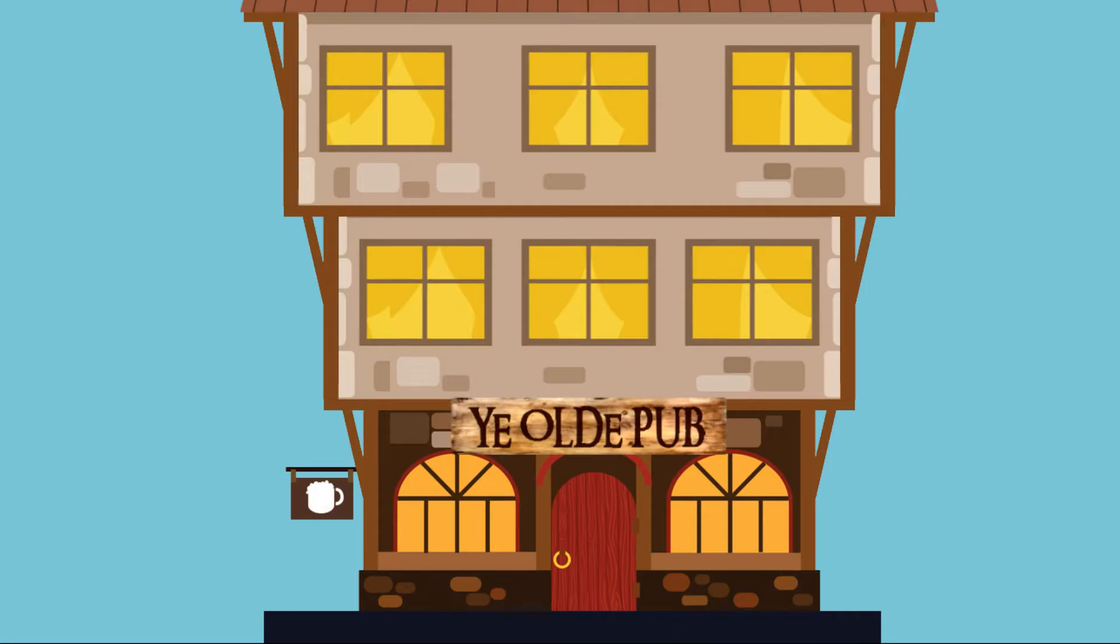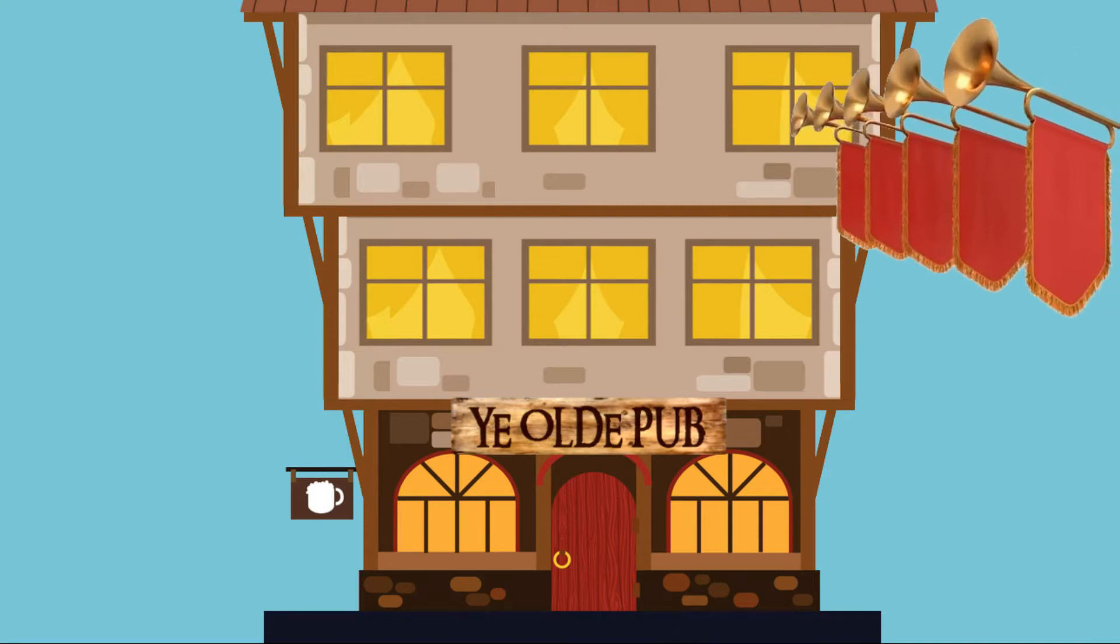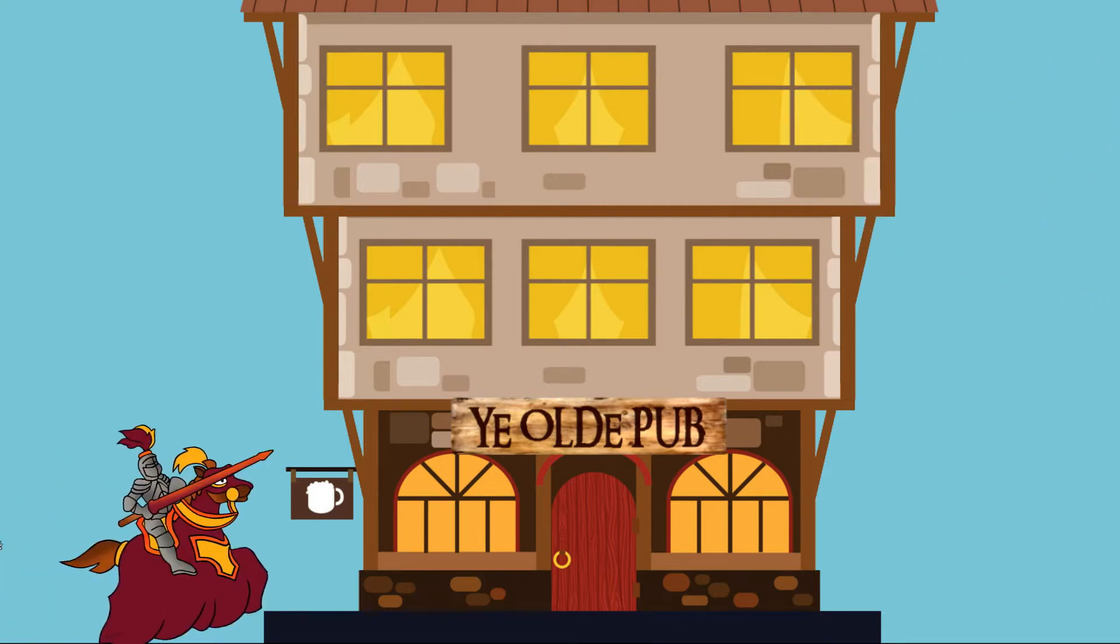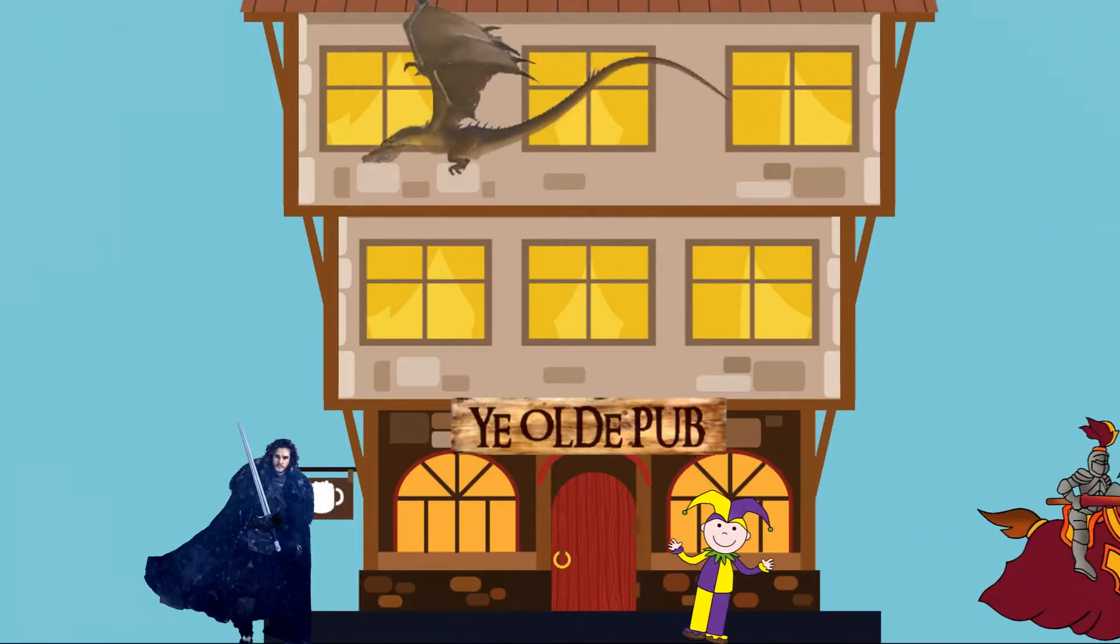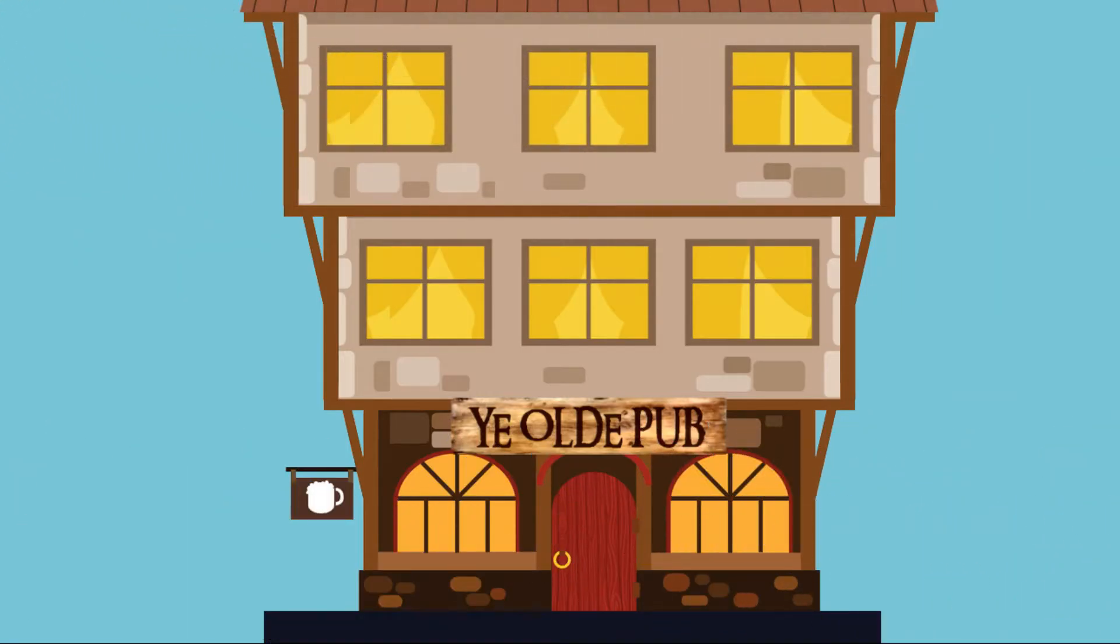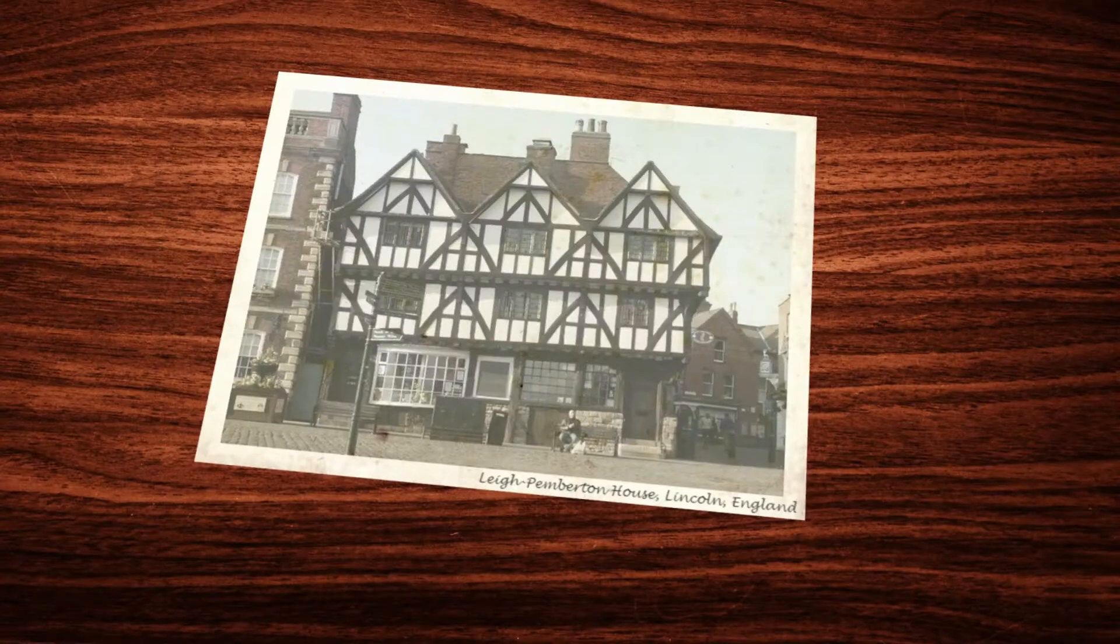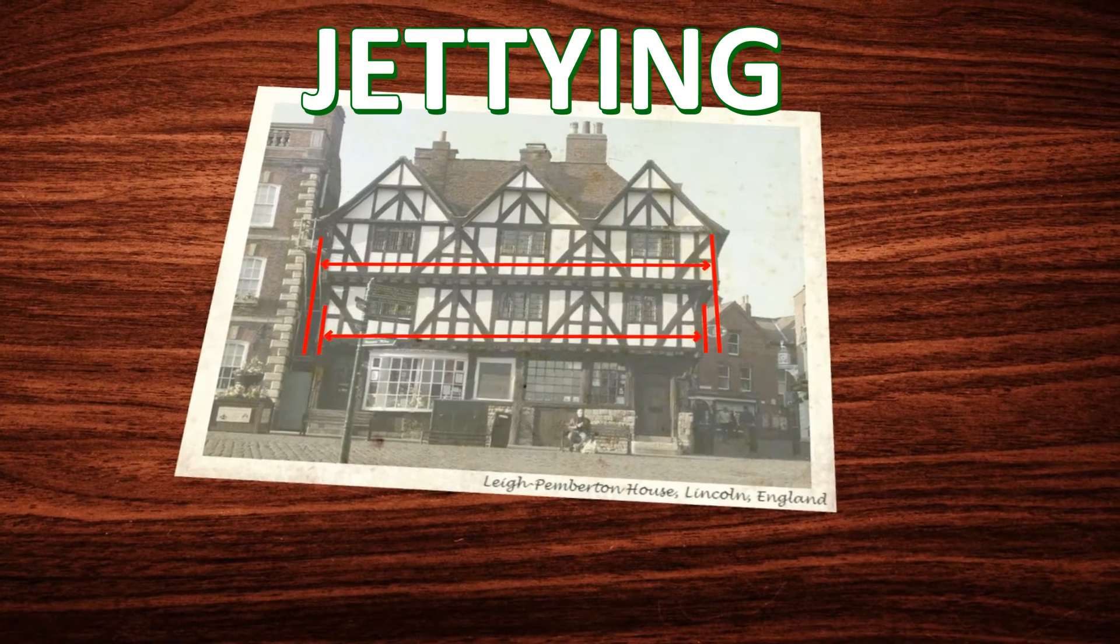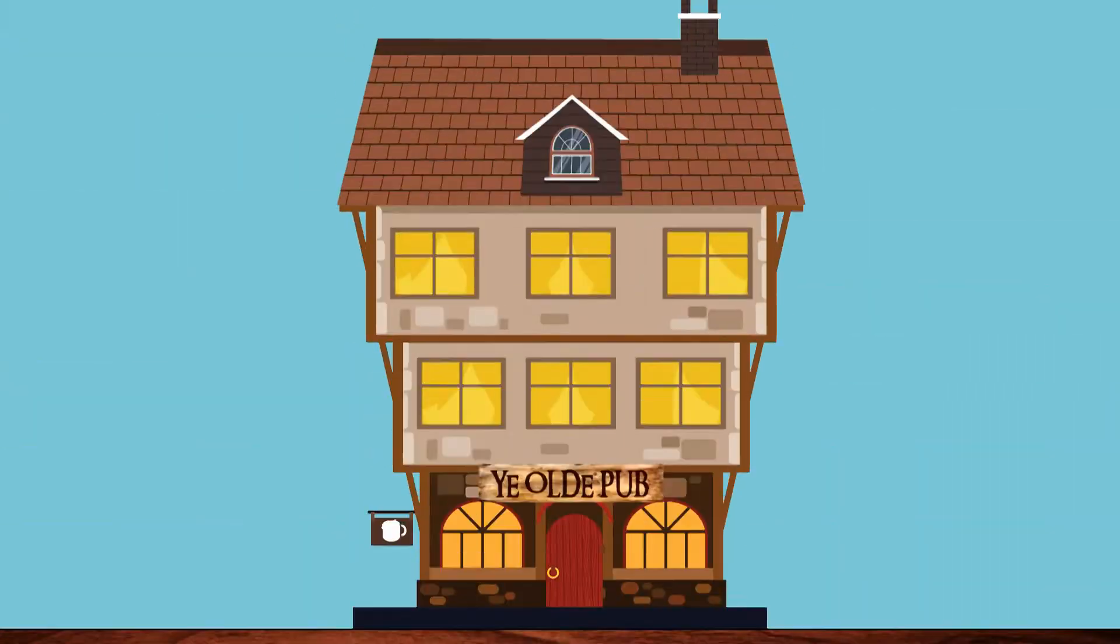Medieval Timber Buildings. I said Medieval Timber Buildings. A process known as jettying, it seems like the opposite of logic but it's actually very, very clever.